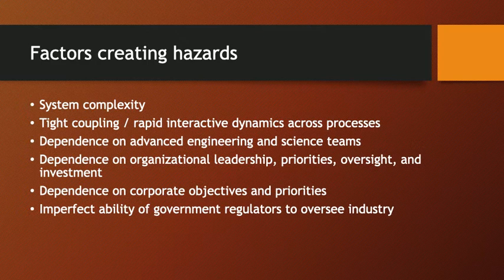Furthermore, there is a dependence often on a parent corporation whose interests may be rather different from the immediate safety and production interests of the local plant. The relationship between a corporation headquartered in Chicago and design and manufacturing plants in Seattle may involve a conflict of priority and goal between corporate objectives and local firm objectives. Finally, we've spent time talking about the importance of government regulation and the challenges which make effective regulation of hazardous industries more difficult.